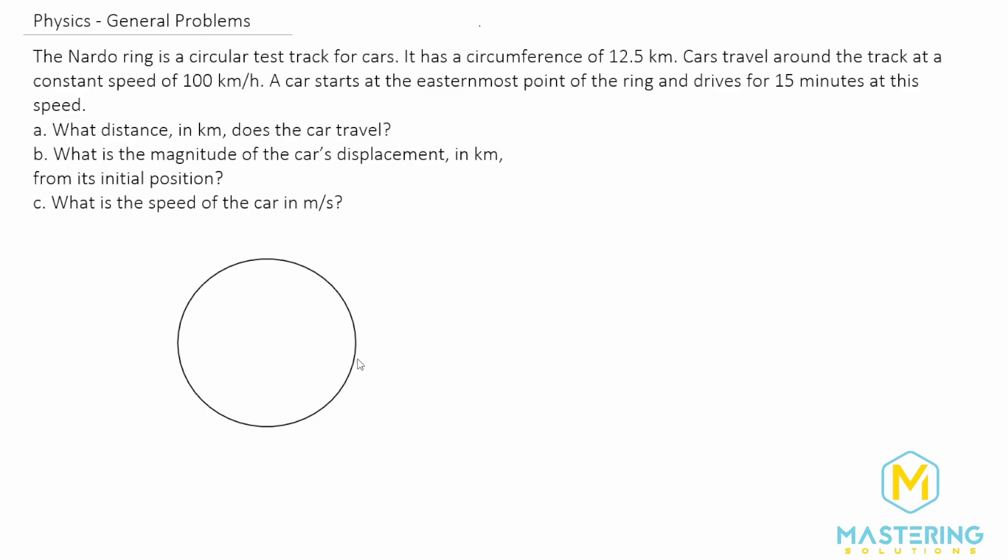They say that the car starts at the easternmost point of the ring and drives 15 minutes at this speed. So let's write a little compass here. We have north, south, east, and west. So they say he starts right here at the easternmost point, and then it drives around the track. Doesn't really matter which way it goes. And they say that they drive 100 kilometers per hour for 15 minutes.